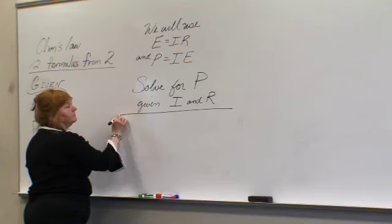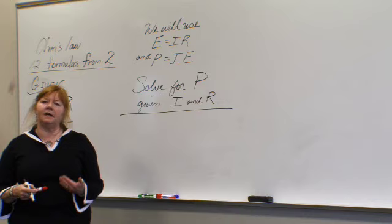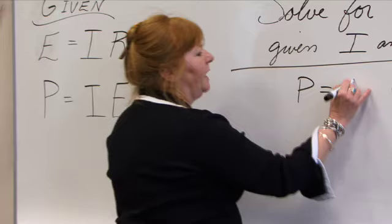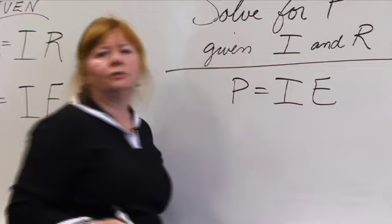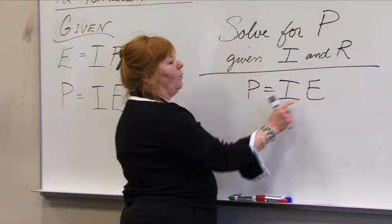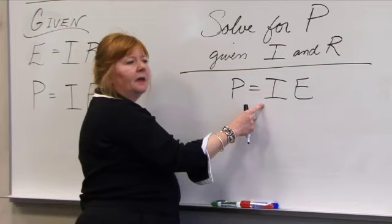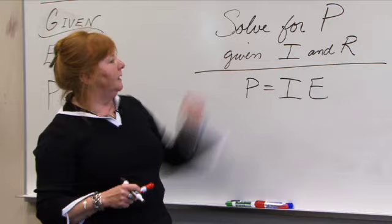Now I want you to notice, we know that P equals I times E. So you may feel at first held back because you don't have enough information to work with, or do we? And actually we do. Because what we want to do is take what we are given, use what we know, and substitute it into the equation so that we can solve for P, given I and R.